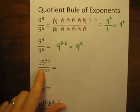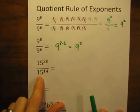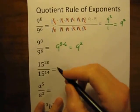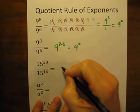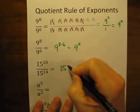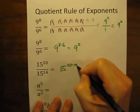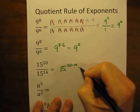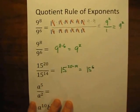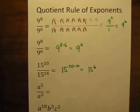Let's do the remaining problems. 15 to the 20th power divided by 15 to the 14th power. Using the quotient rule, this simplifies to 15 to the 20 minus 14 power, which is equal to 15 to the 6th power. The problem is now a lot shorter and a lot simpler.